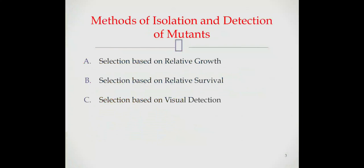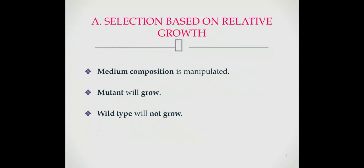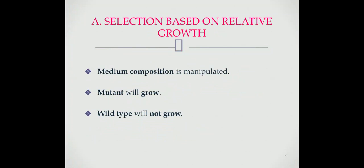Three methods are commonly used for isolation and detection of mutants. This includes selection based on relative growth, selection based on relative survival, and selection based on visual detection. In the first method, selection is based on the relative growth of mutant and wild type organism. The medium composition is manipulated in such a way that only the mutant will grow and form visible colony, while the wild type organism is either non-dividing or killed during the selection process.